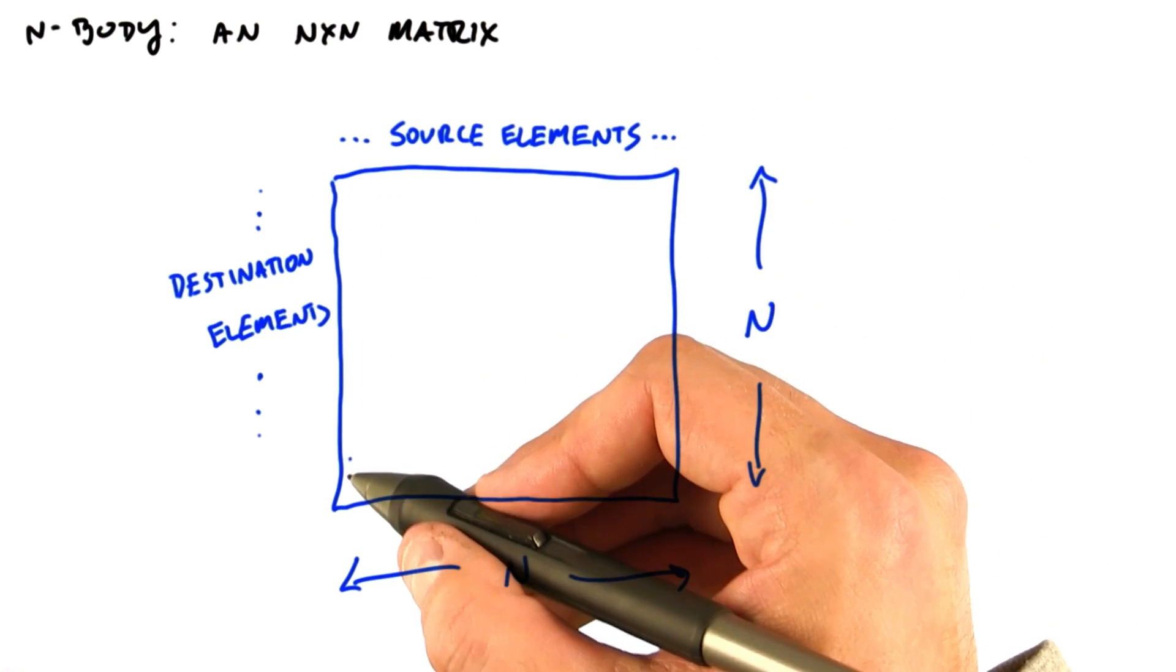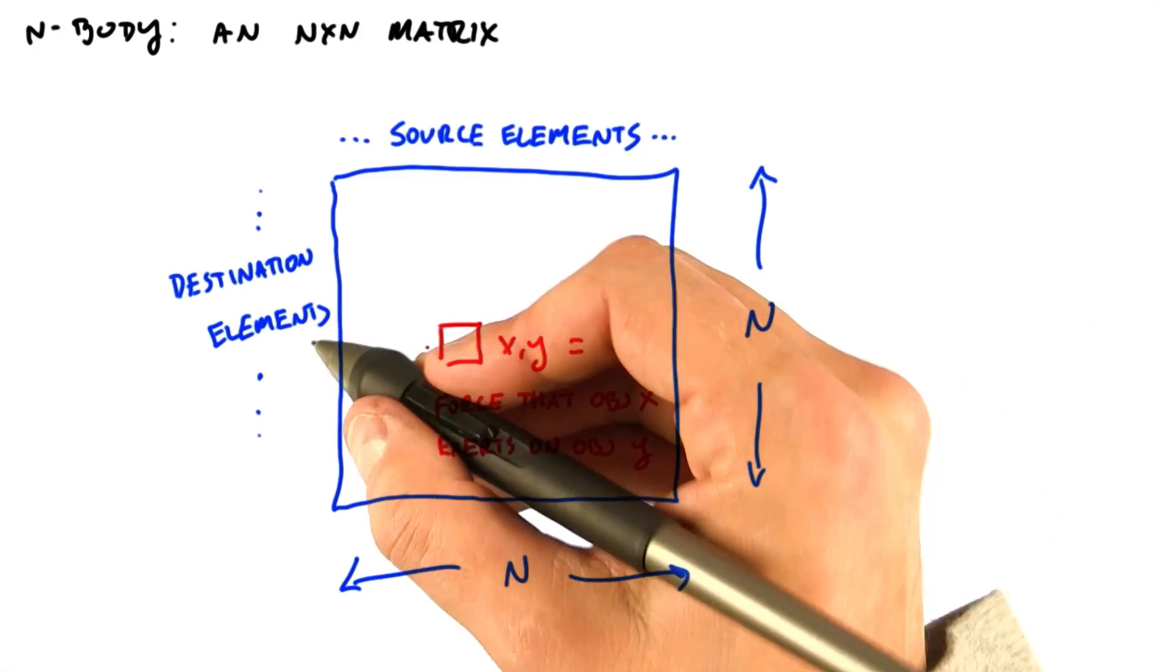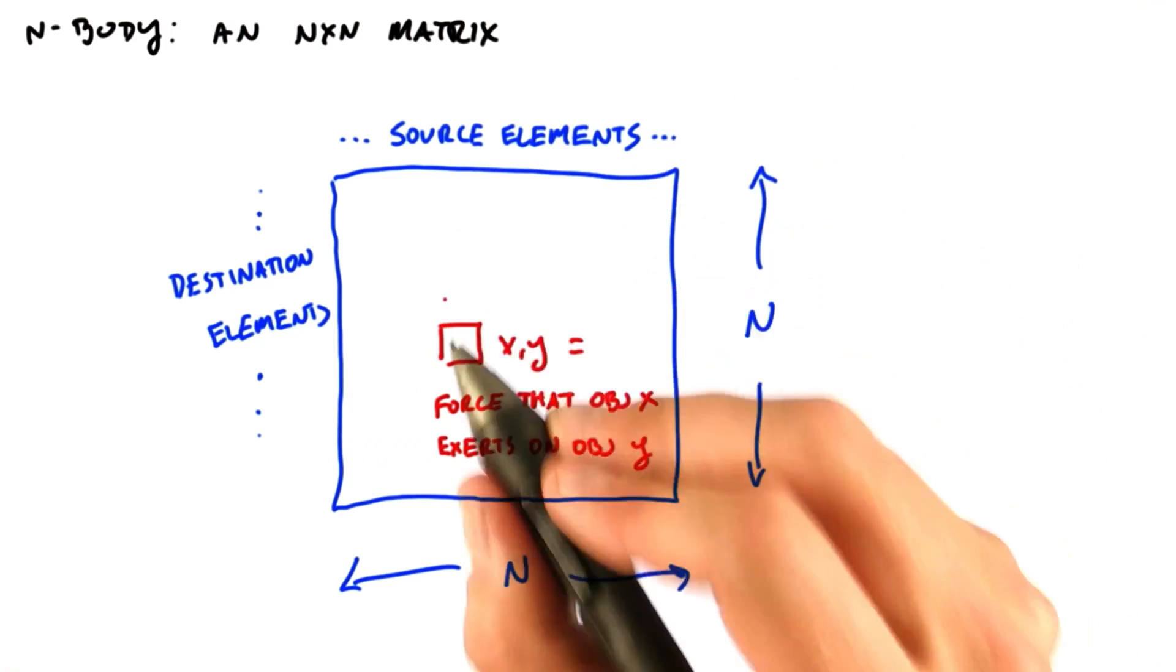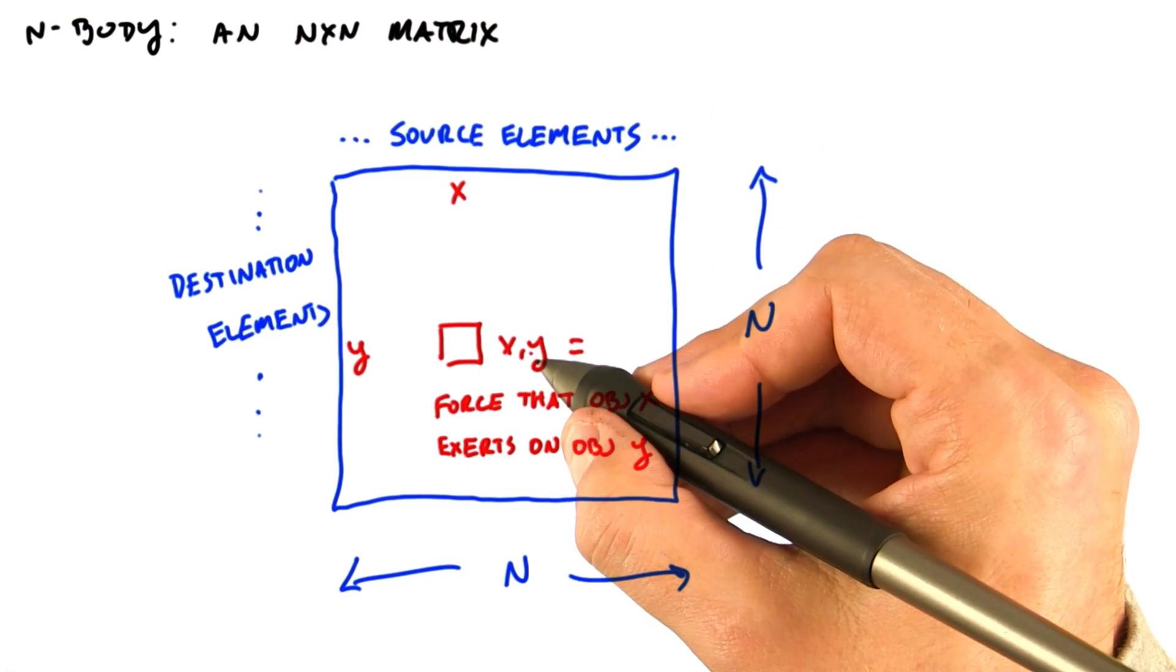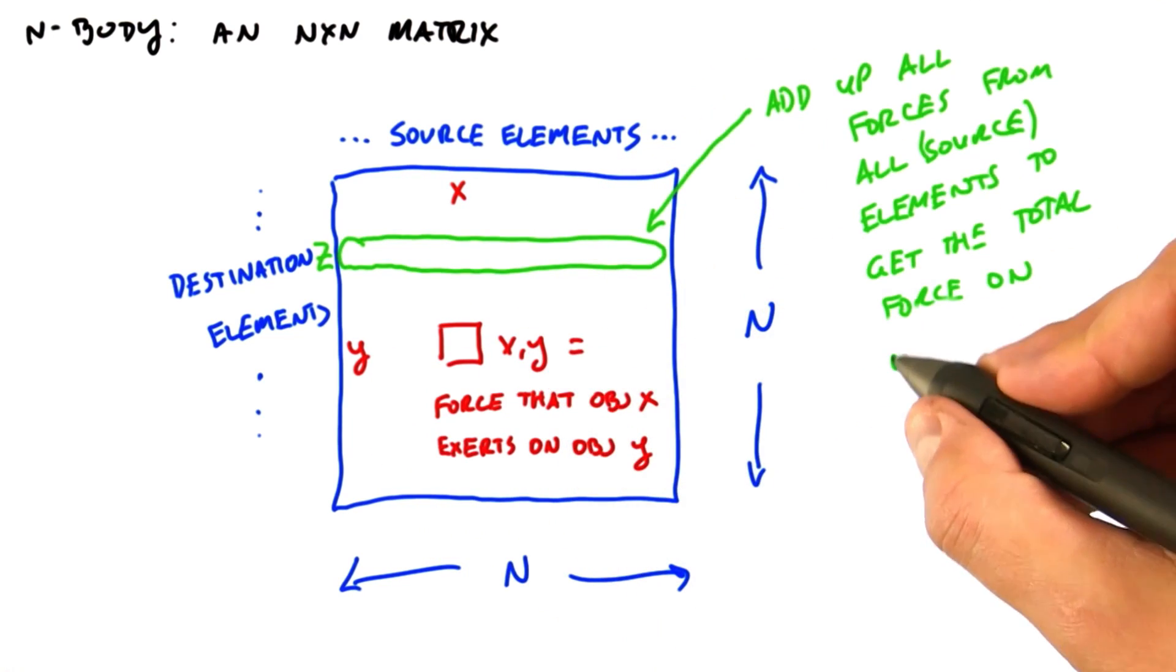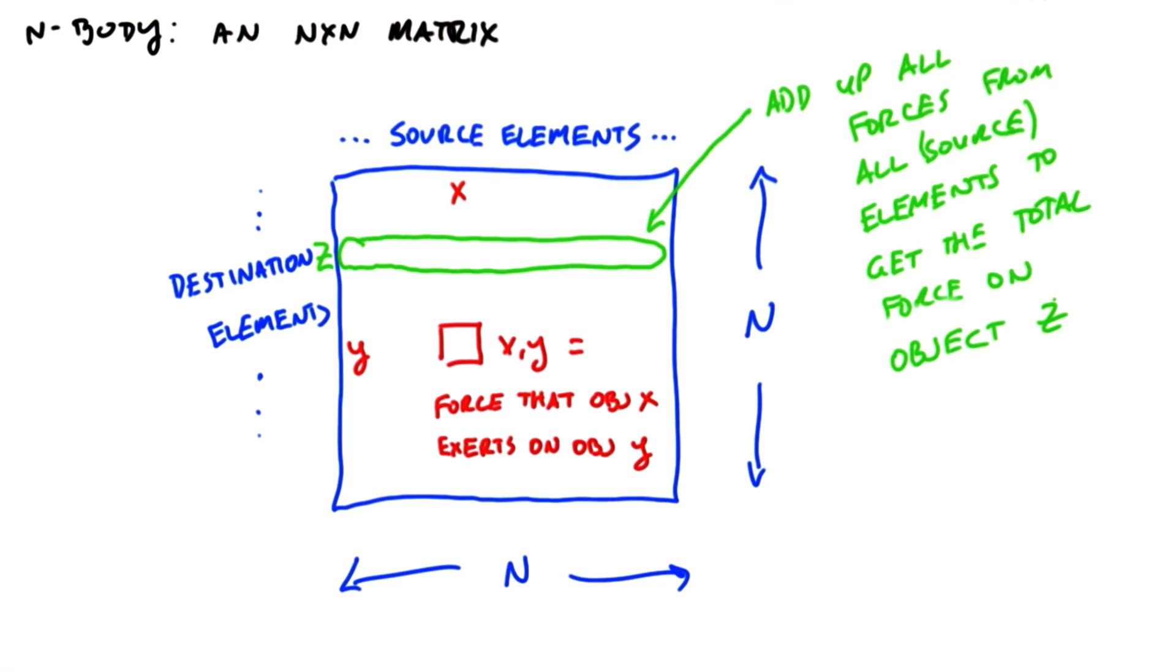The source and destination objects are the same objects, of course. This is just how we're organizing the computation. So the matrix element at position x comma y represents the force that source element x exerts on destination element y. And what we want to do is calculate the total amount of force from all source objects on each destination object.